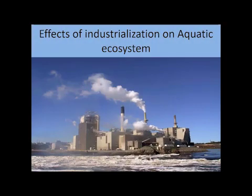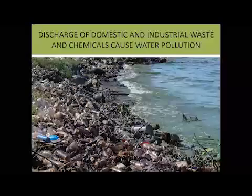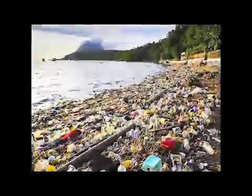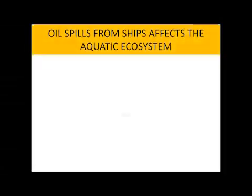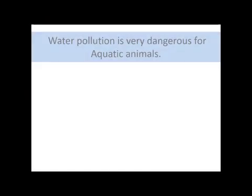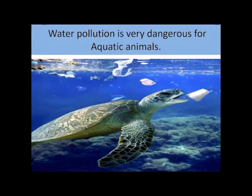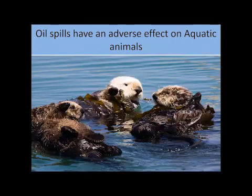Effects of industrialization on the aquatic ecosystem: Discharge of domestic and industrial waste and chemicals cause water pollution. Oil spills from ships affect the aquatic ecosystem. Water pollution is very dangerous for aquatic animals, and oil spills have an adverse effect on aquatic animals.